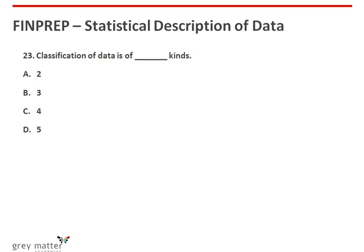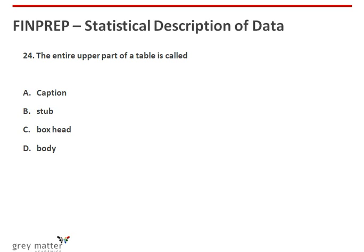Twenty-third question: classification of data is of four kinds — qualitative, quantitative, chronological, and geographical. So the answer is four, that is option C. Twenty-fourth question: the entire upper part of a table is called the caption. The answer is option A, which says it is captioned.